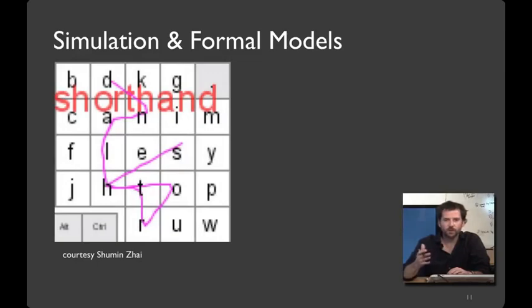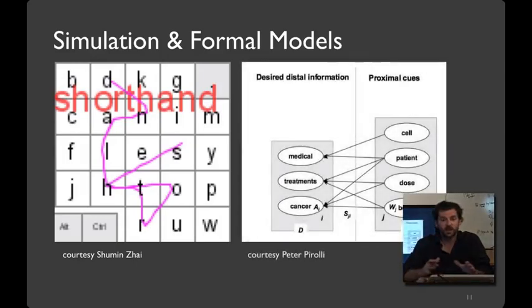One example of this can be found in the ShapeWriter system, where Schumann-Sai and colleagues figured out how to build a keyboard where people could enter an entire word in a single stroke. They were able to do this with the benefit of formal models and optimization-based approaches. Simulation has mostly been used for input techniques because people's motor performance is probably the most well-quantified area of HCI. And while we won't get to it much in this intro course, simulation can also be used for higher-level cognitive tasks. For example, Pete Paroli and colleagues at PARC have built impressive models of people's web-surfing behavior. These models enabled them to estimate, for example, which link somebody is most likely to click on by looking at the relevant link text.